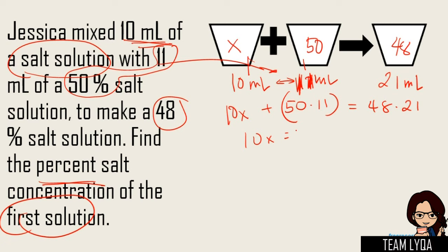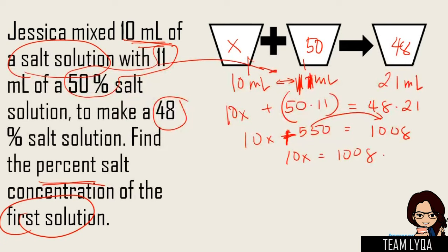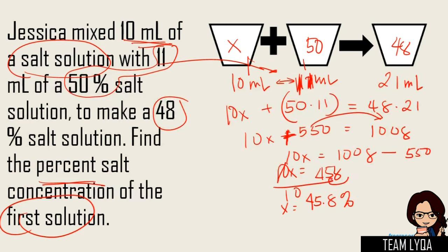So we have 10x. Tapos, 50 times 11 is 550. So 10x + 550 = 48 × 21. Now, 48 times 21 — you can do 48 times 20 muna, tapos isa pang 48 — that is 1,008. So 10x = 1,008. Dahil plus yung 550, pag nilipat mo siya sa kabila magiging minus — itatranspose natin siya. So 10x = 1,008 − 550, which is 458, divided by 10. Para makancel to, you have x = 45.8%. Mag-move mo lang ng isang decimal place kasi 10 yung divided by 10. So the answer is 45.8%.